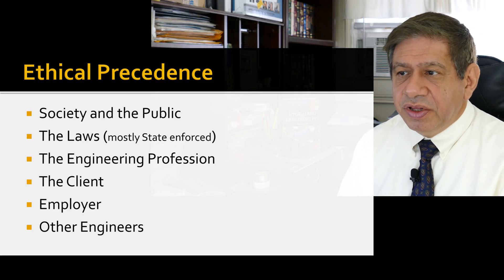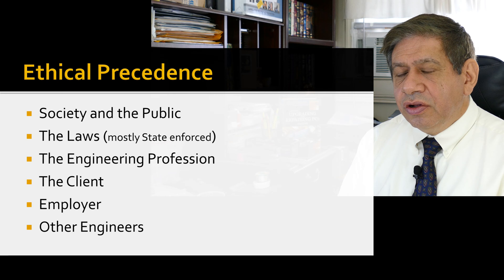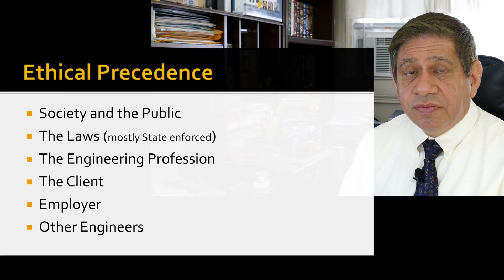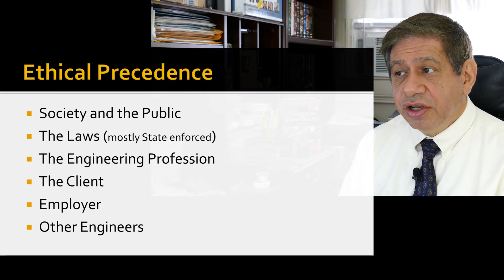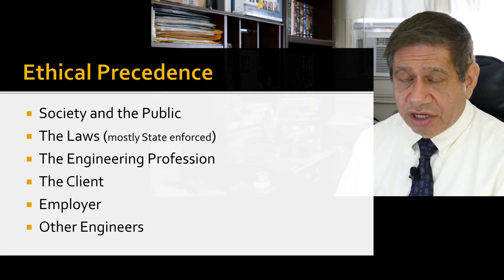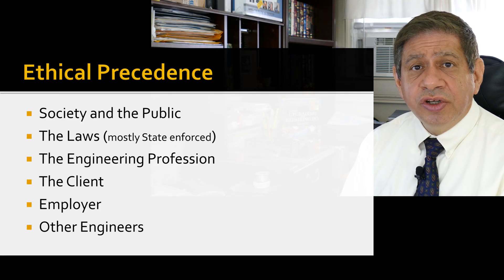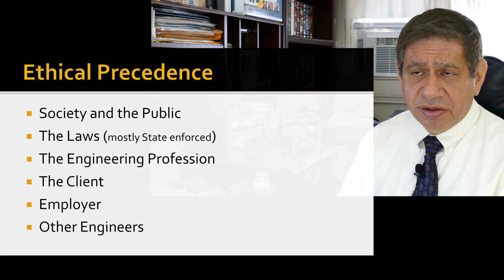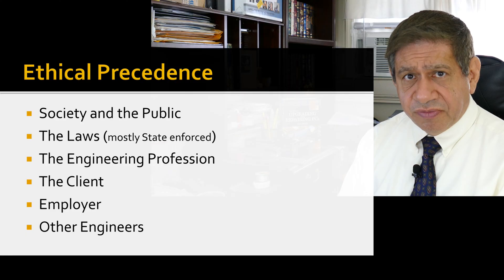Ethical precedence — there are ethical guidelines that you need to follow for different interested parties. The interested parties on your ethical behavior as a professional engineer include the overall public and society as a whole. The whole idea of having a professional engineering license is to protect the public, so that's number one. Then, of course, you have the laws — they tend to mostly be state-enforced, although there are a couple of federal laws that cross over into this as well.